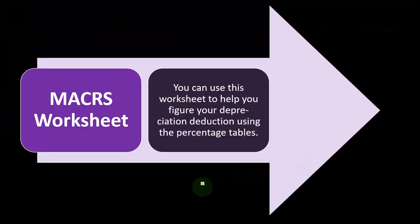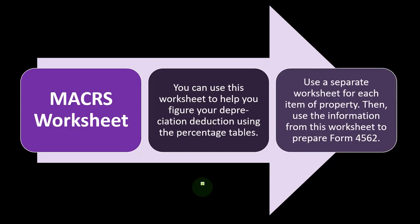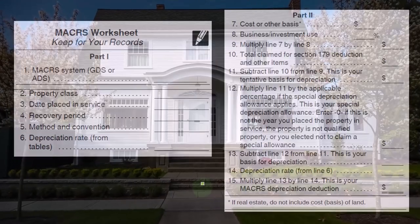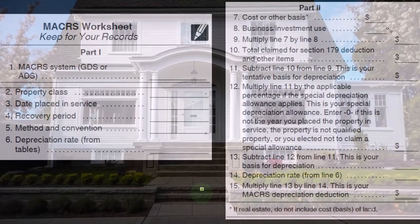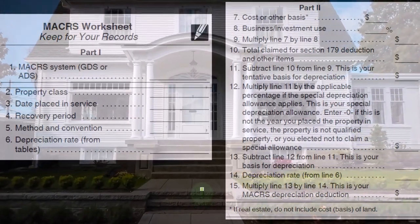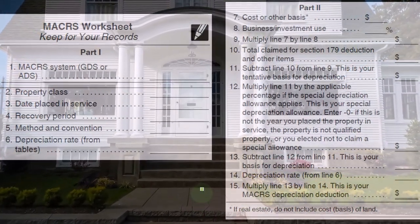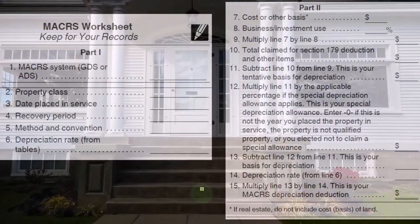So the MACRS worksheet — you can use this worksheet to help figure your depreciation deduction using the percentage tables. Use a separate worksheet for each item of property, then use the information from this worksheet to prepare form 4562. Obviously, if you did all this by hand it would be quite complex, but it gives you an idea of what is happening. And you want to be able to explain what is happening if you're using software, and possibly be able to do projections into the future.